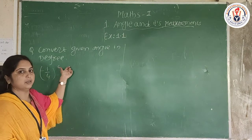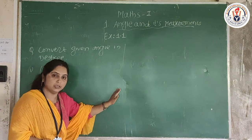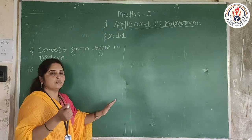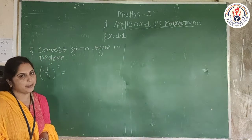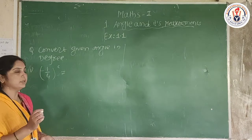We know the radian measure and we have to convert it to degrees. So we have to multiply it by 180/π to convert radians to degrees.